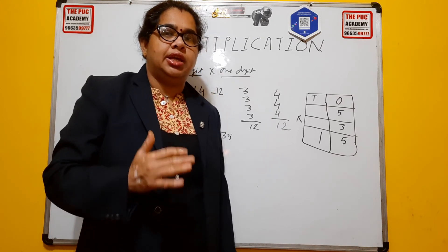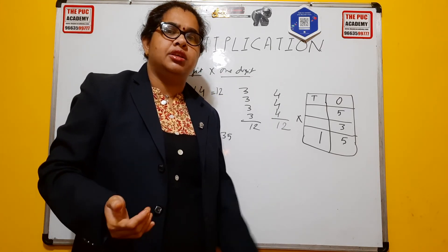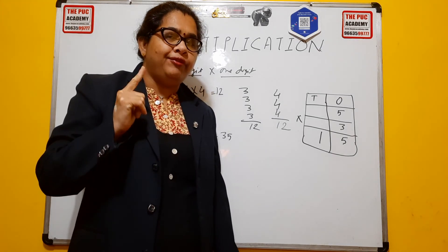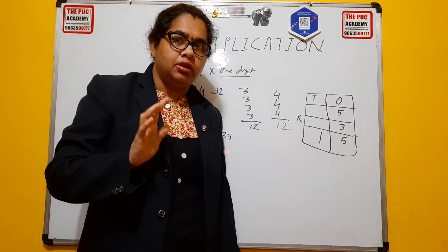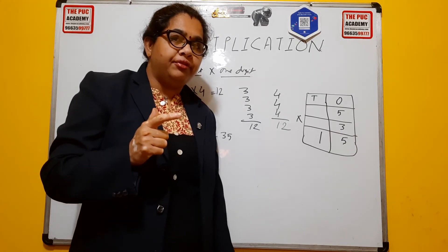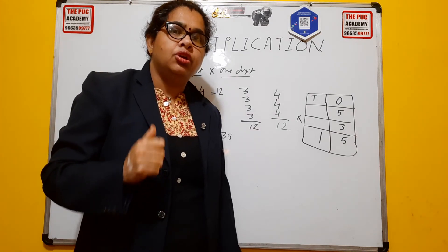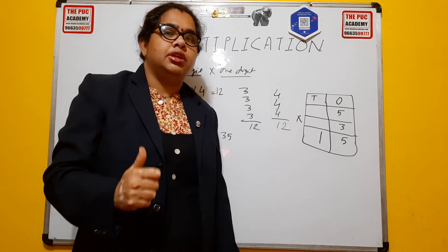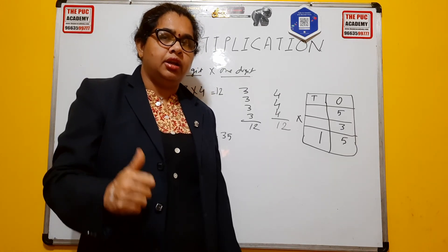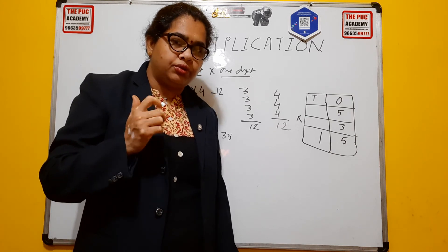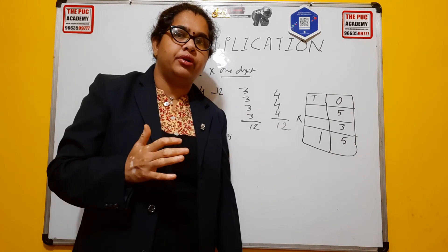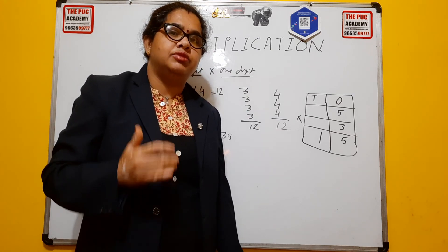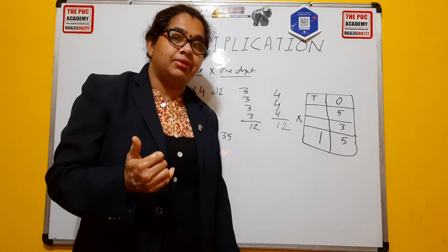There are many ways people say to learn tables, but nothing is faster than memory. So you have to learn the tables by heart daily to be perfect in multiplication. As you are in Class 2, at least learn tables from 1 to 10 by heart — it is very important. Start learning daily tables without fail, which will help you learn multiplication faster.